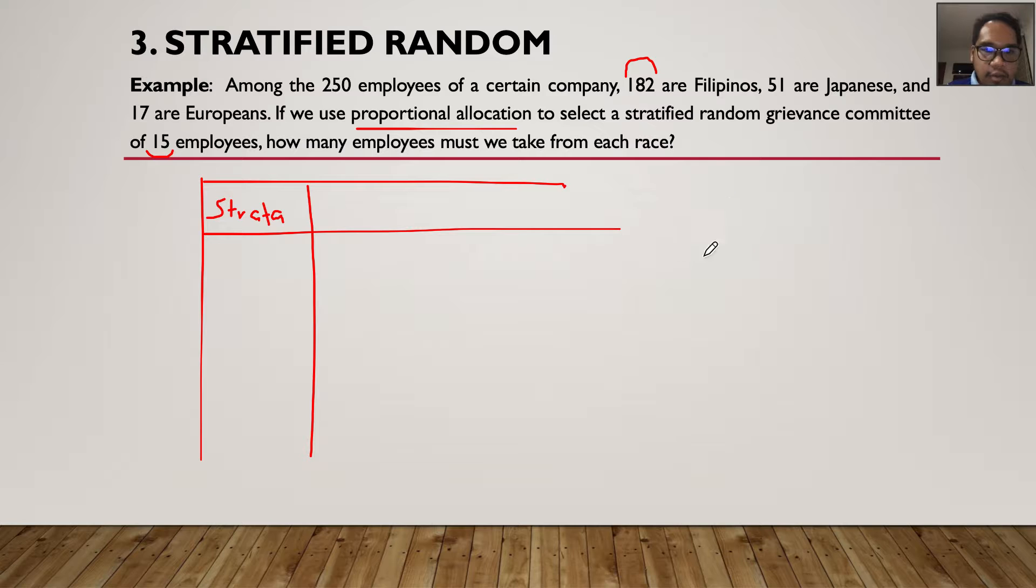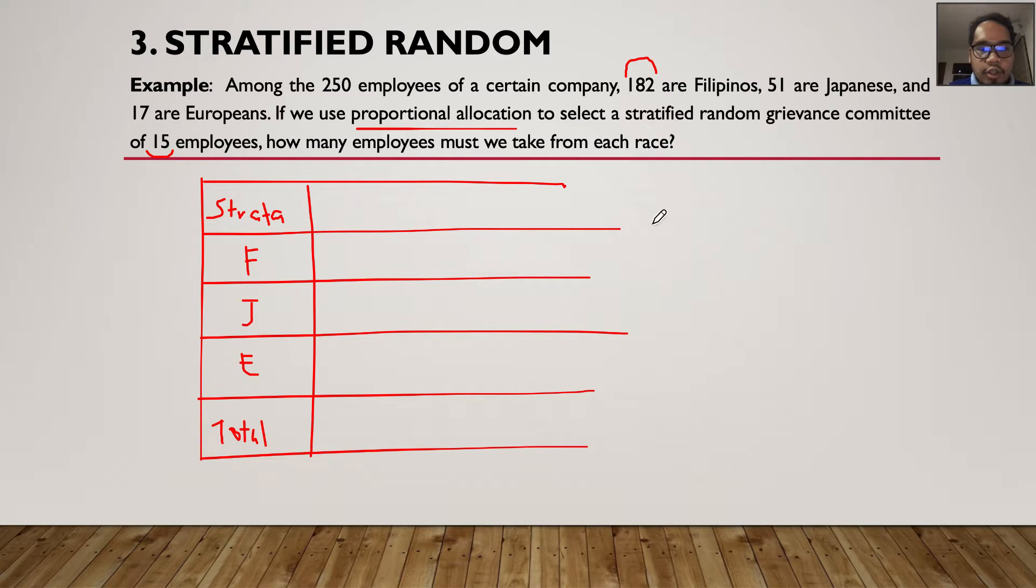We have three strata here. I will write F for Filipinos, J for Japanese, and E for Europeans. I'll write the total here down below. Let me spell that out.